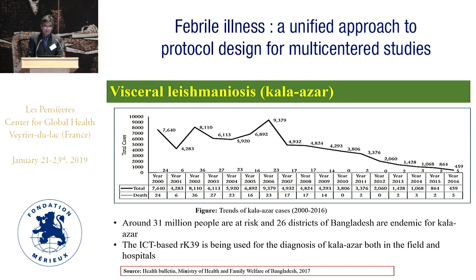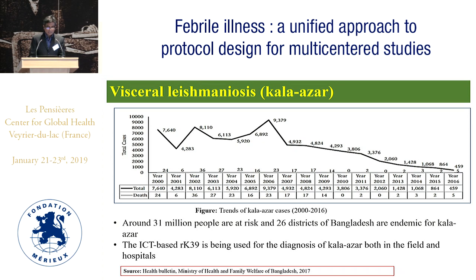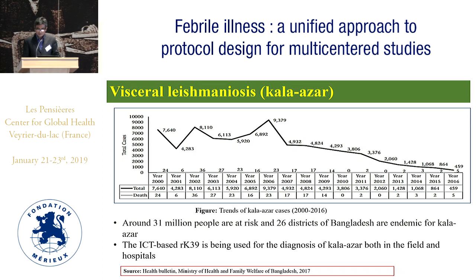Visceral leishmaniasis: 26 districts of Bangladesh are endemic for kala-azar, and around 31 million people are at risk. An ICT-based approach using RK39 is being used for diagnosis of kala-azar, both in the field and in hospitals. Looking at the figure, there is a decreasing trend of visceral leishmaniasis — that is, kala-azar — in Bangladesh.